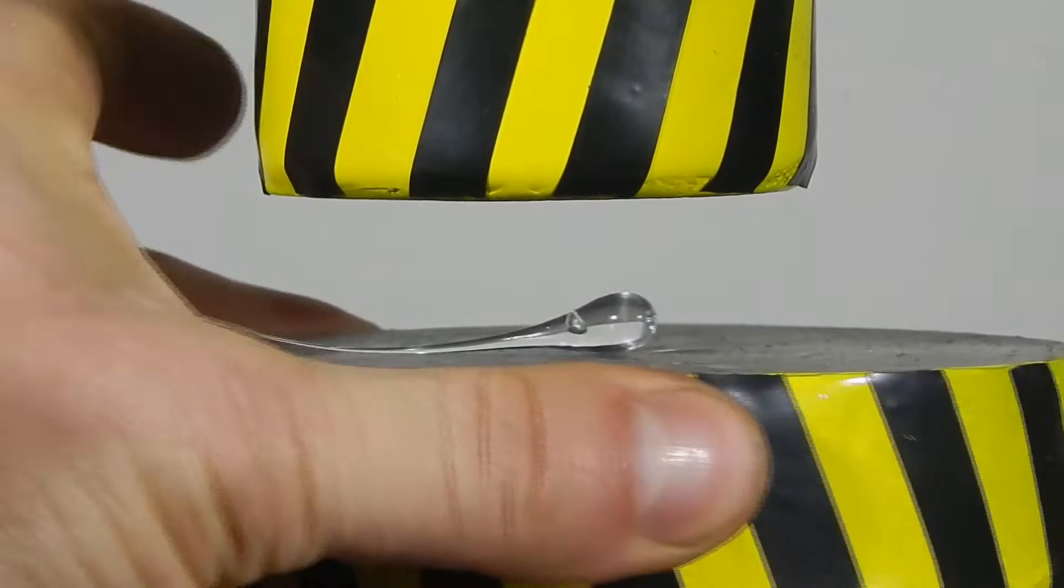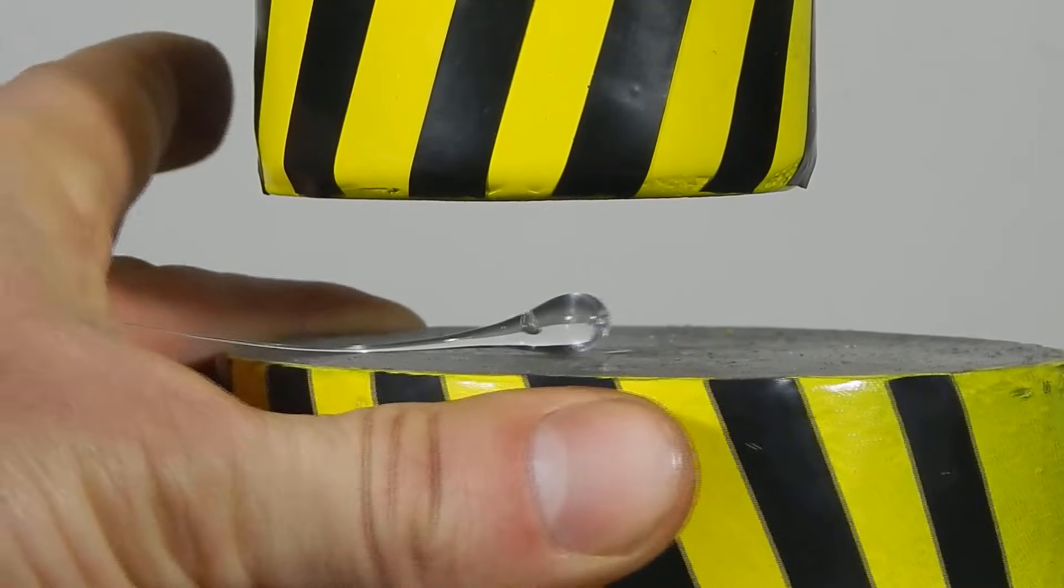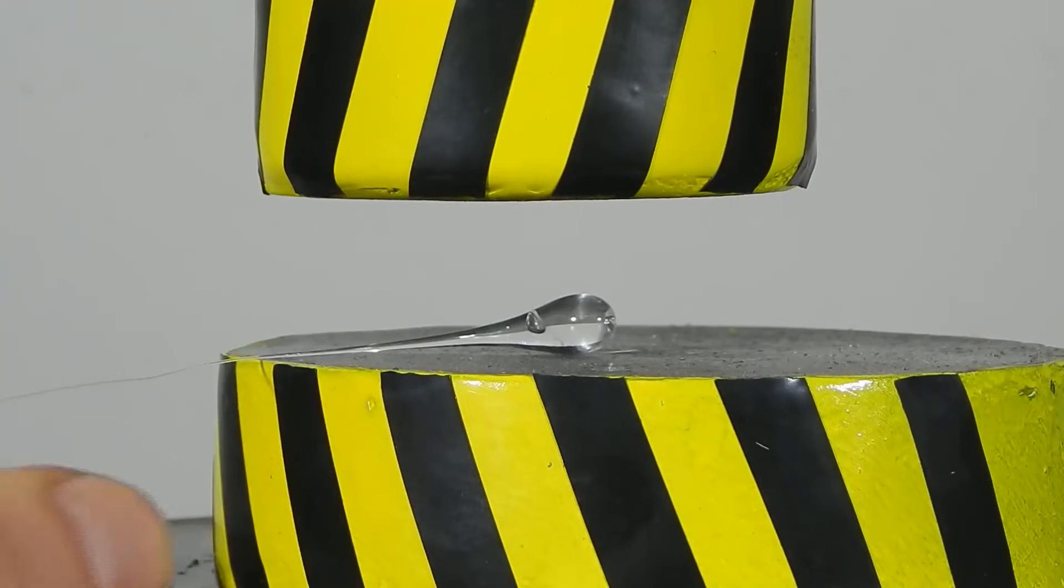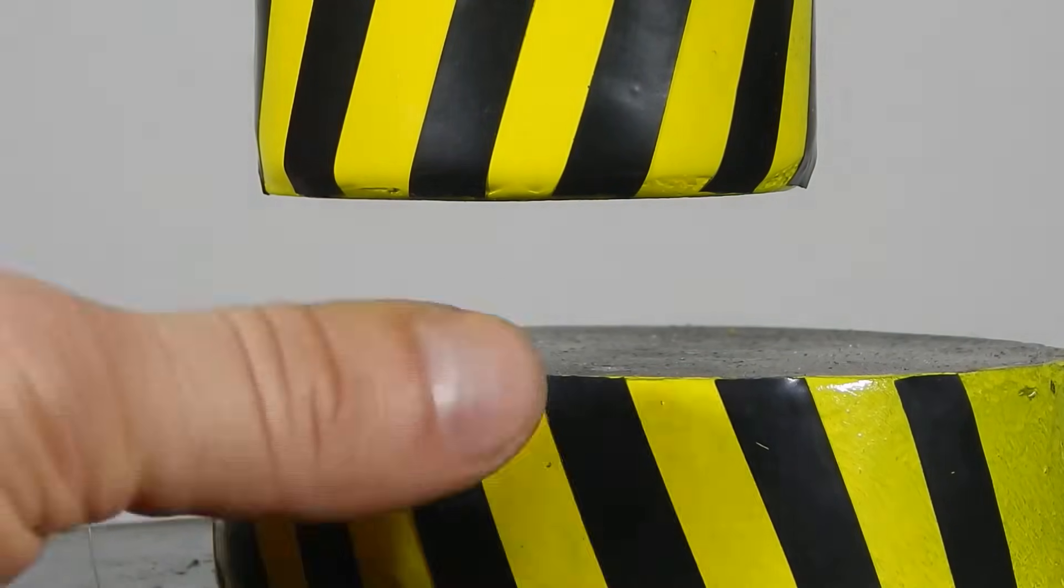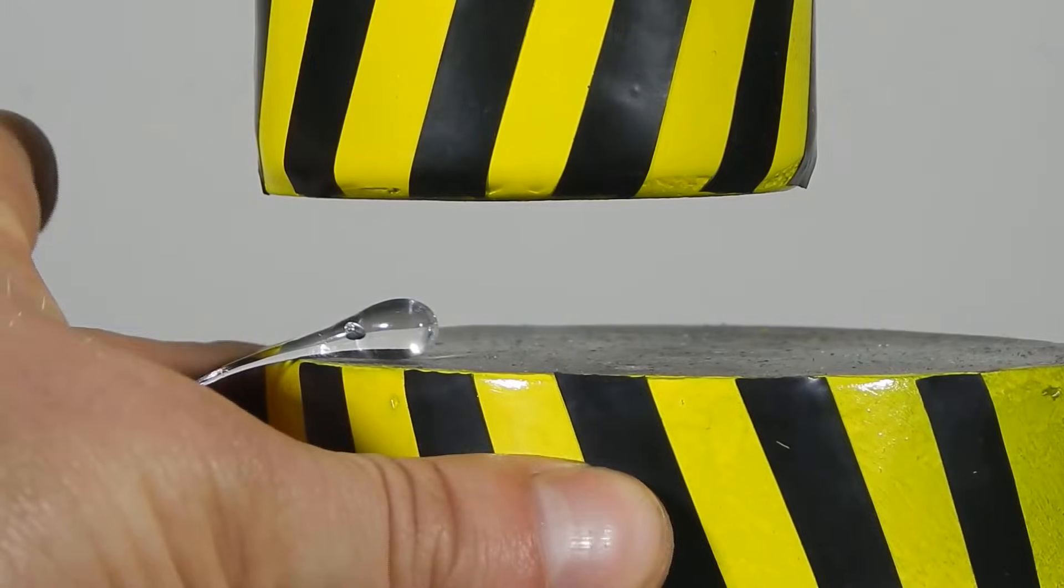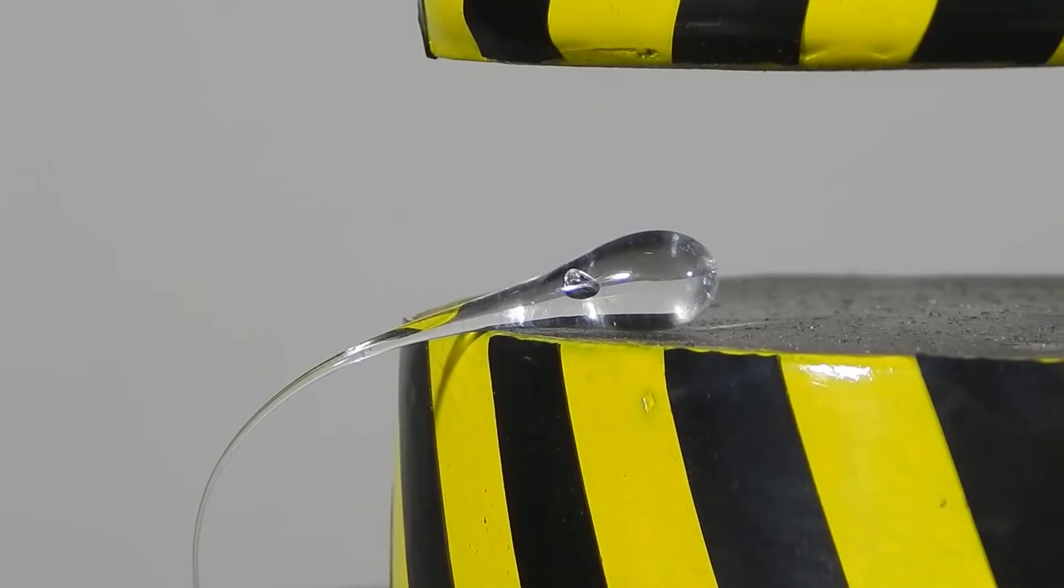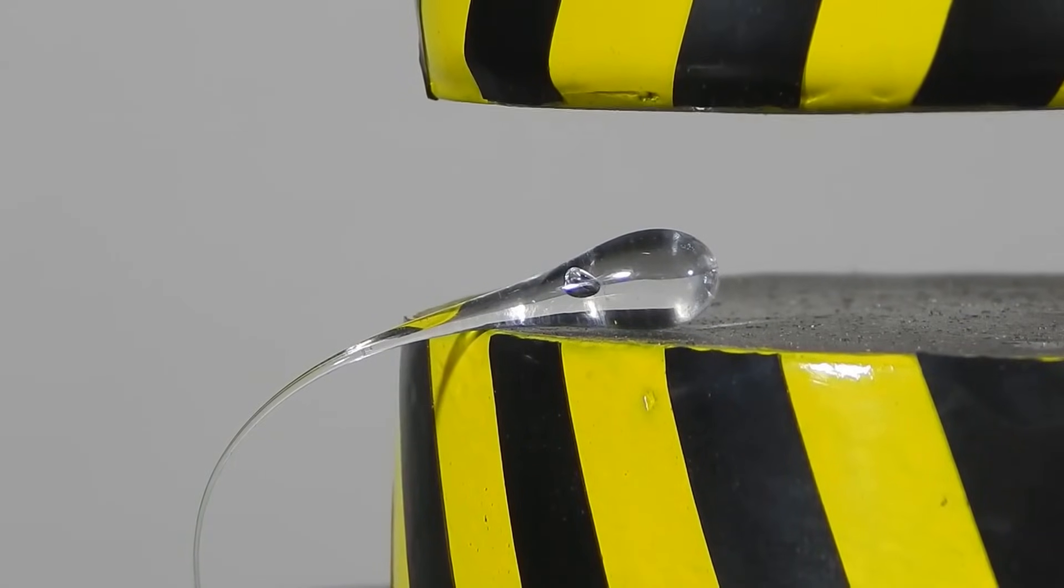We will try to place the drop so that the press affects only its upper part, so the tail would not be affected at all. And now, we will set the press to move at its lowest speed possible.